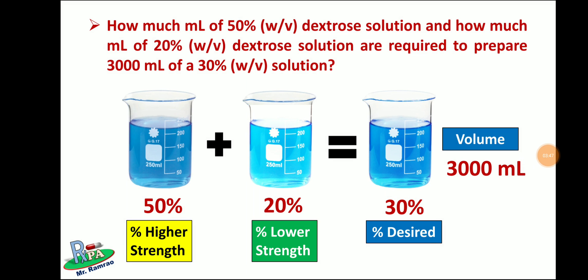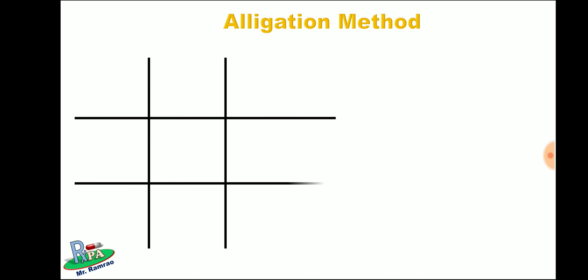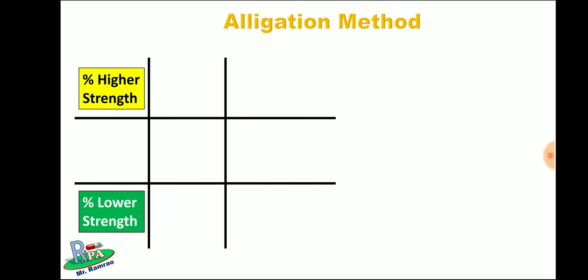Using the allegation method you can easily find how much ml of 50% and how much ml of 20% is required to prepare 3000 ml of 30% solution. First, draw the allegation grid or allegation matrix. In the top left corner write percent of higher strength, in the bottom left corner percent of lower strength, and in the center write the percent desired.